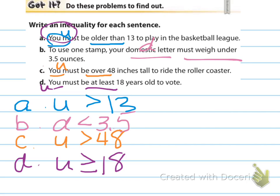For C, using U to represent you: you must be over 48 inches to ride the roller coaster, so U is greater than 48. If you're right at 48 inches, that's not enough. You have to be over 48 — 48.2 inches is fine, but exactly 48 or under is not. D: you must be at least 18 years old to vote. That's greater than or equal to — you can be exactly 18 to vote, or any age older, but not 16 or 12.